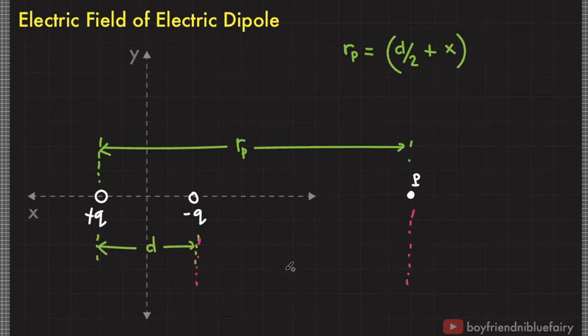Also, let R sub N be the distance of the negative charge to point P and, based on the figure, it is equal to R sub N equals quantity x minus d over 2.